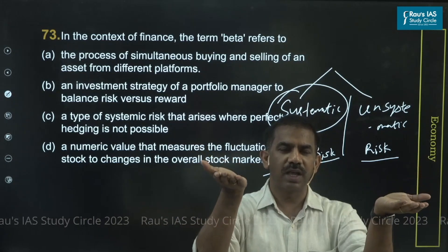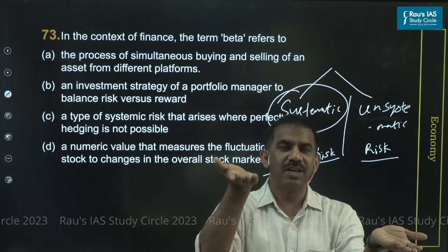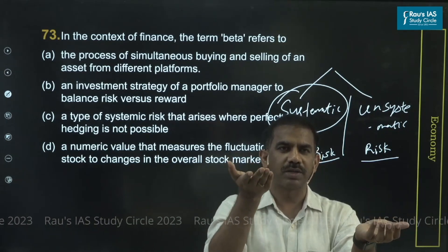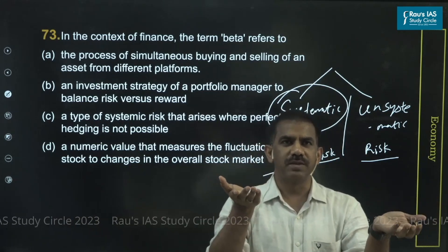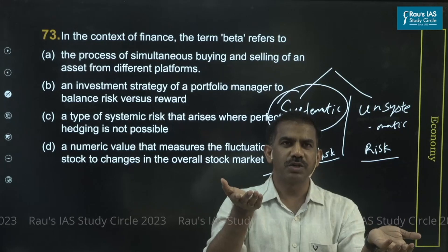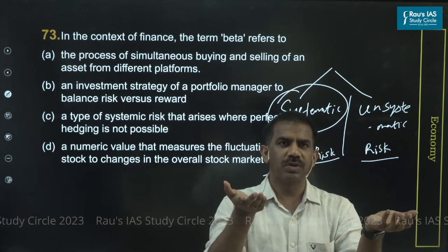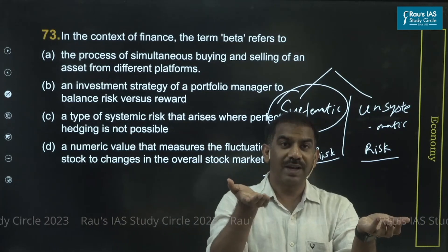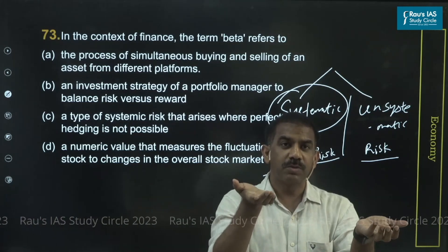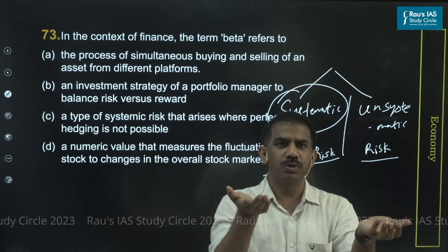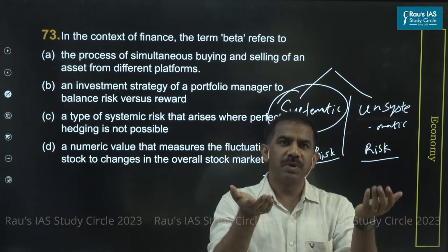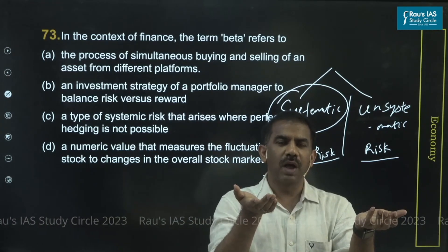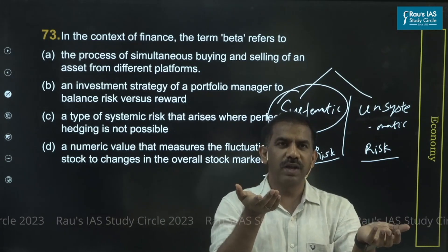Stocks which are relatively more volatile than the market would have a beta significantly more than one. Those stocks which move along with the markets have a beta equal to one. Beta less than one means they are relatively independent - to an extent their movement is less volatile than compared to the market. Take the case of a sector like FMCG - what we call defensive stocks. No matter whether the economy is in recession or crisis, people end up buying fast-moving consumer goods like Hindustan Unilever or ITC. These stock prices tend to be relatively less volatile.